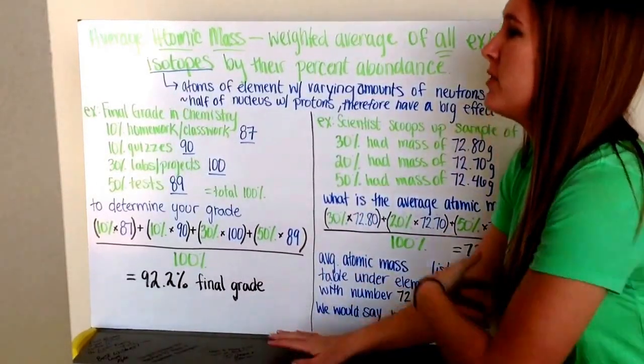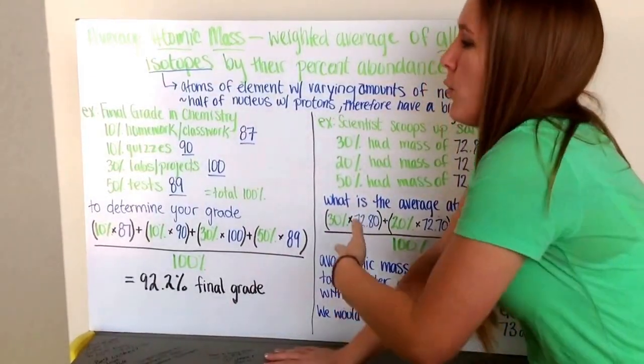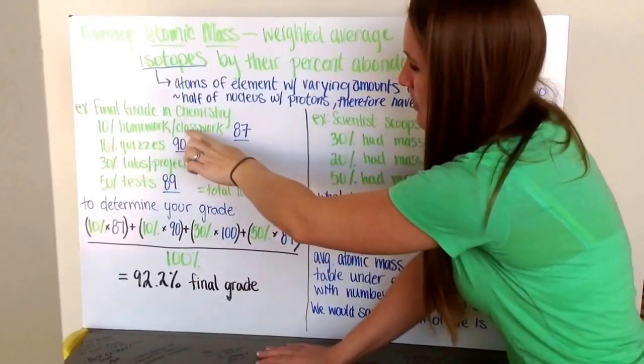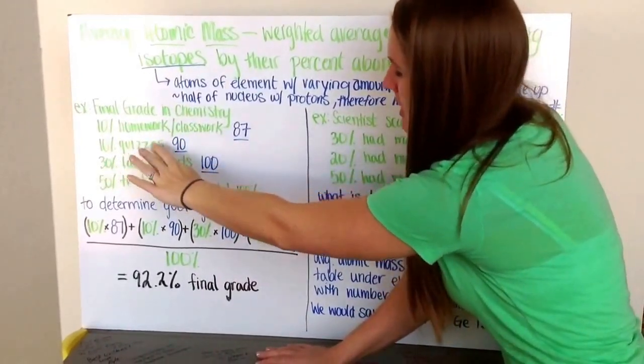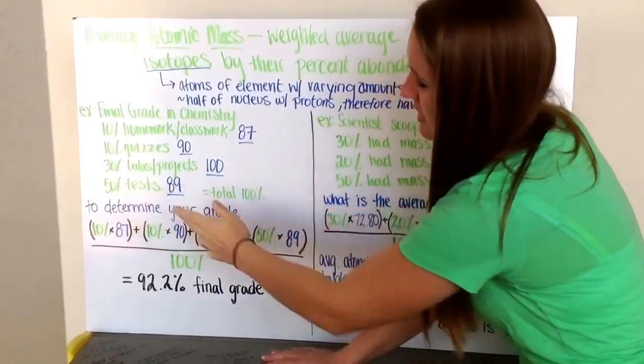Average atomic mass is similar to calculating your average grade in chemistry class. For example, 10% of your grade is homework and classwork, 10% is quizzes, 30% is labs and projects, and 50% is tests.